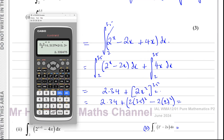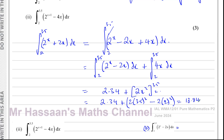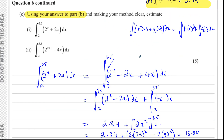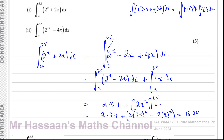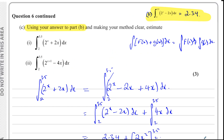Calculating: 2.34 + 2 × (3.5)² − 2 × (2)² gives us 18.84. That's the answer to part c(i).